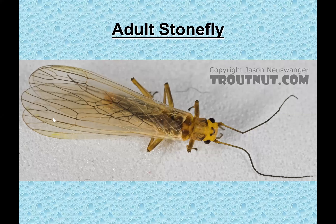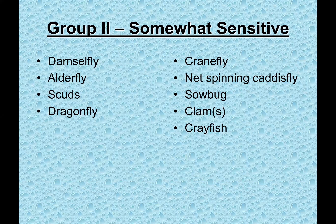The adult stonefly is different from the mayfly and caddisfly in its wing position. Unlike the mayfly (wings straight above the head) or caddisfly (pup tent), the stonefly folds its wings flat and evenly over its back. Those are the sensitive aquatic insects — the ones we want to find in good numbers because they indicate good water quality.